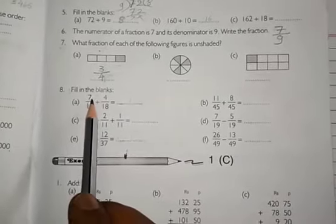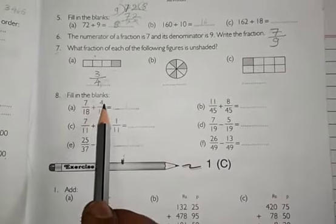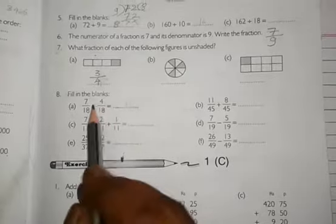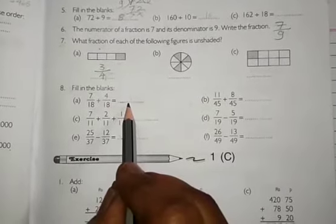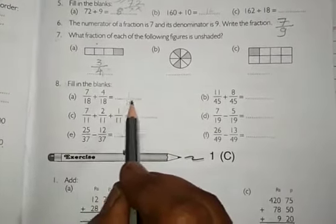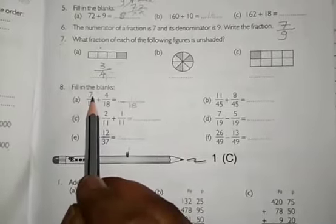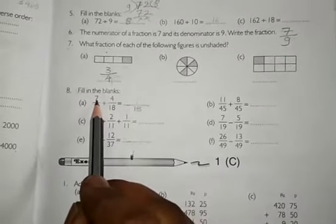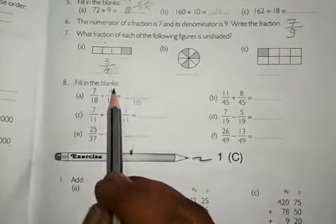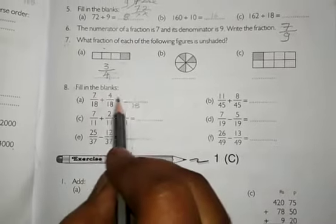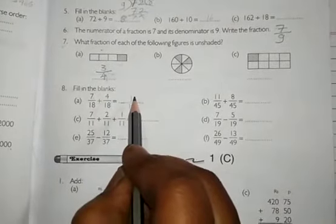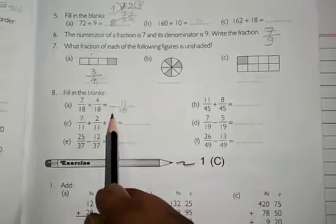So A number 7 by 18 plus 4 by 18. Denominator 18, so we write here 18 and numerator is 7 and 4. So we add both 7 and 4. 7 plus 4 is equal to 11. You do like this.